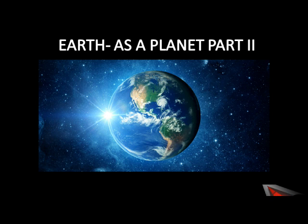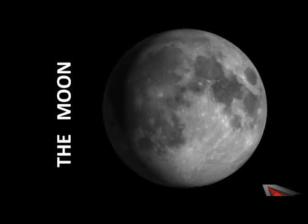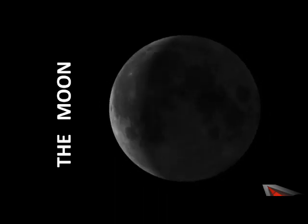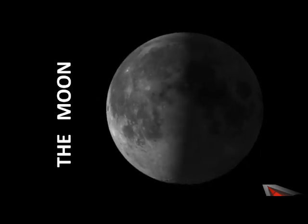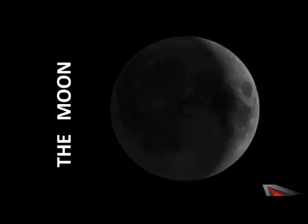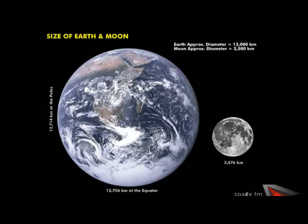Yes, it is the moon. We will talk about the only satellite of the earth — the moon. It is the nearest heavenly body to the earth and therefore appears to be larger than any other heavenly bodies in the sky. It is located at an average distance of 384,000 km. The diameter of the moon is 3,476 km, or roughly one-fourth of that of the earth. The moon has only one-sixth of the gravitational force.